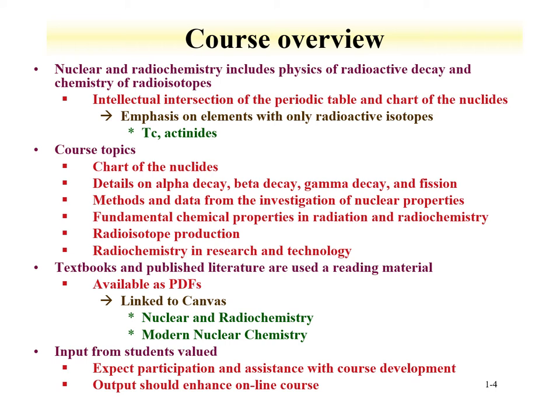The course includes the physics of radioactive decay and the chemistry of isotopes. Fundamentally, radiochemistry is at the intersection of the periodic table and the chart of the nuclides. The periodic table has structure based upon the electrons, whereas the chart of the nuclides has structures and describes properties based upon how the nucleons — the neutrons and protons — are engaged in the nucleus. So: periodic table, electrons; chart of the nuclides, neutrons and protons within the nucleus.